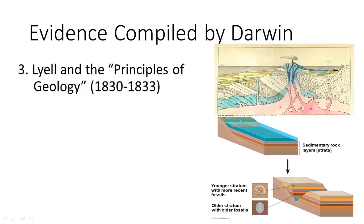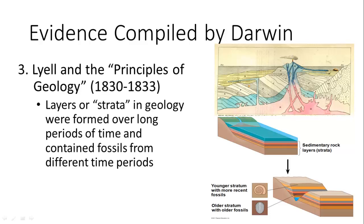Darwin was also influenced by a publication by Lyell, a geologist who produced groundbreaking work called Principles of Geology. It was based on the idea of gradualism — that the strata or layers in the earth actually took a very long time and changed gradually. You found fossils in these different layers, the same in different parts of the world — different areas with the same layers had the same types of organisms. Darwin thought: if it's a more gradual change, maybe there is enough time in the world's history to allow for evolution to occur.